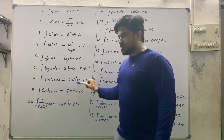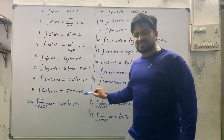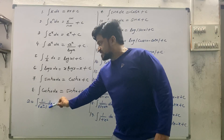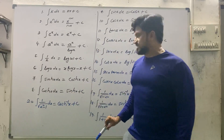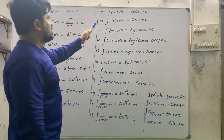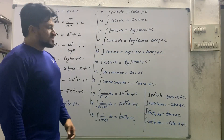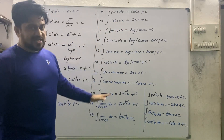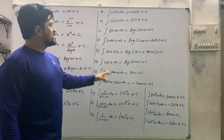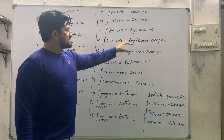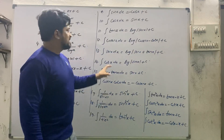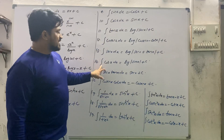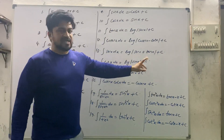Continuing: integral sinh x dx = cosh x + c; integral cosh x dx = sinh x + c; integral 1/√(x²−1) dx = cosh⁻¹x + c; integral sin x dx = −cos x + c; integral cos x dx = sin x + c; integral tan x dx = log|sec x| + c; integral cosecant x dx = log|cosecant x − cot x| + c; integral sec x dx = log|sec x + tan x| + c; integral cot x dx = log|sin x| + c.